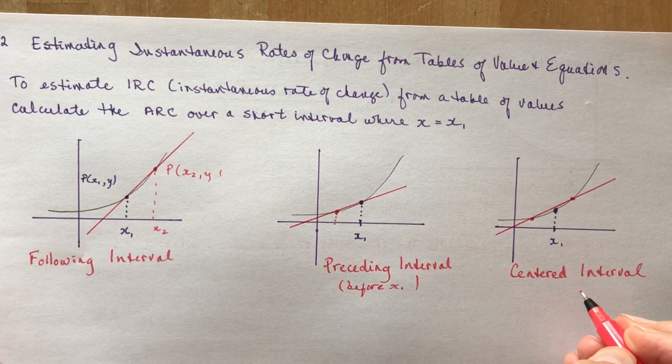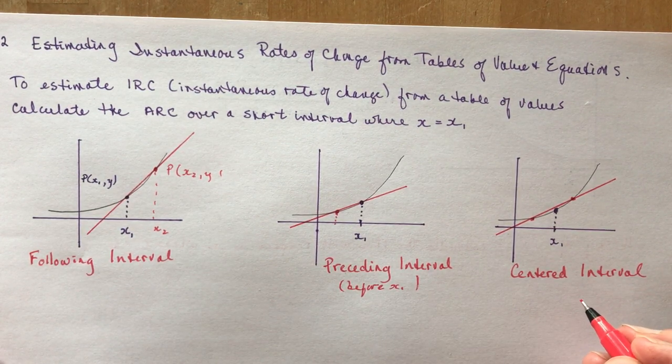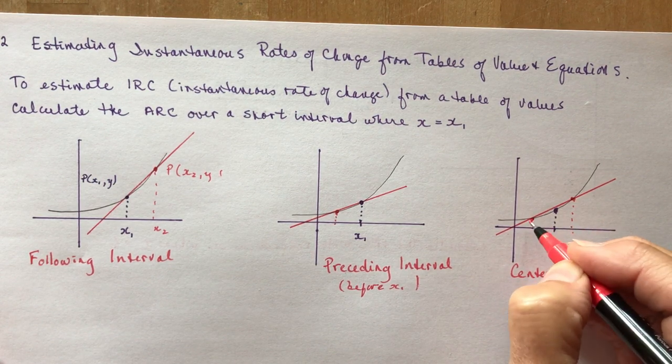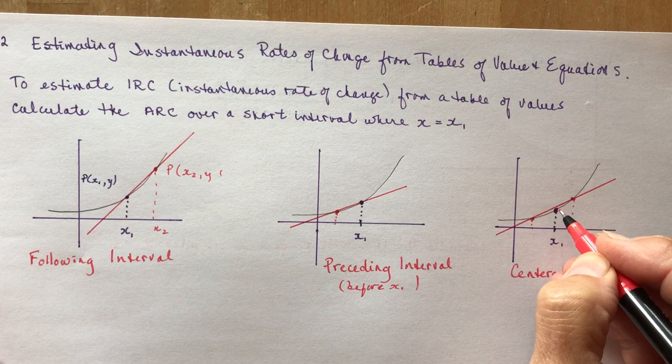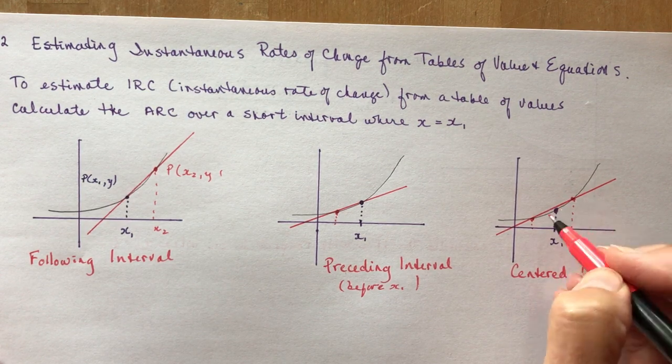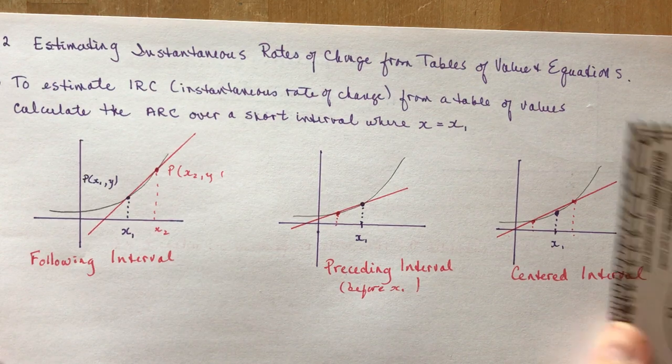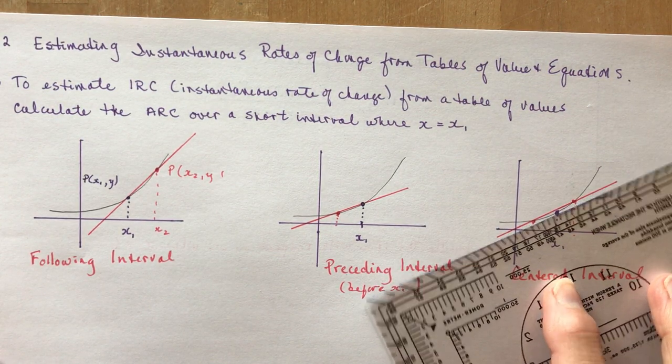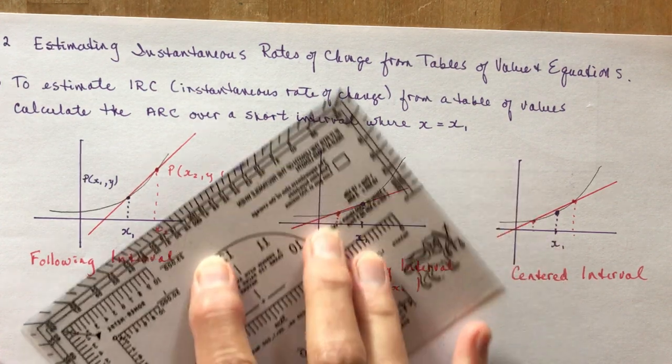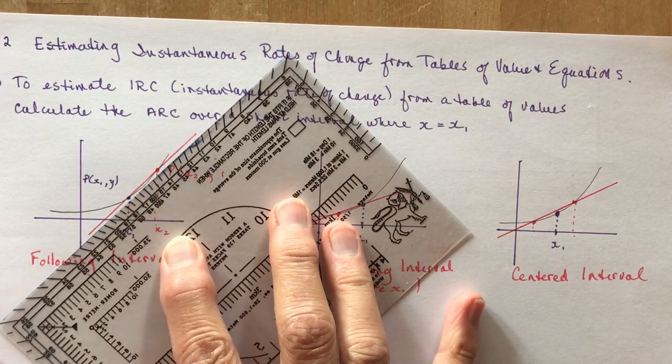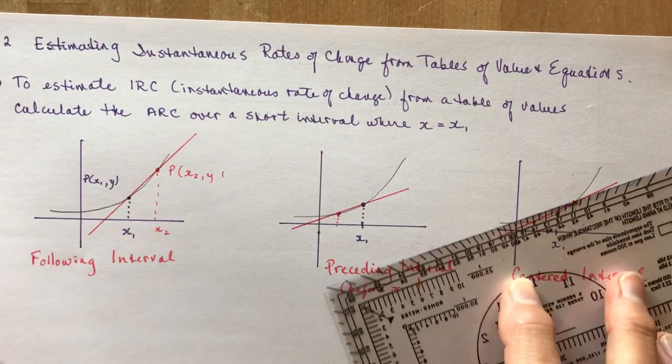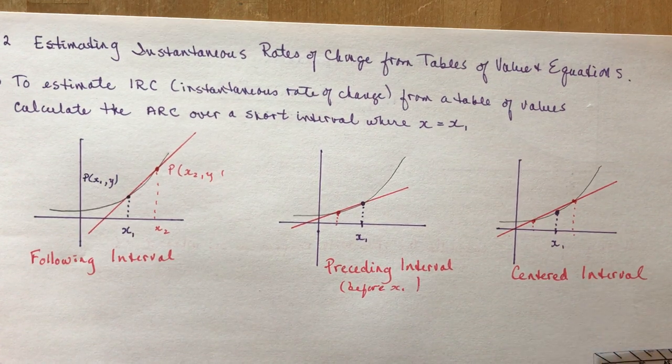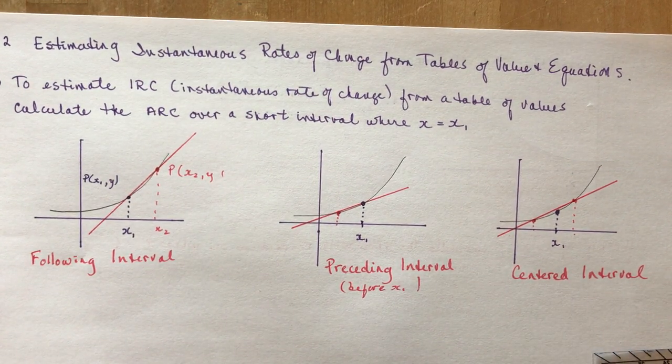Finally, the centered interval. The centered interval should give you the best estimation because you use the same distance away from this. It should give you the best rate of change. If you took this secant line now and slid it down like this, look, it's pretty close to what's happening right there, whereas a preceding one, no, and the following one, absolutely not a tangent line. The centered interval is generally considered to be the closest one to the average rate of change.